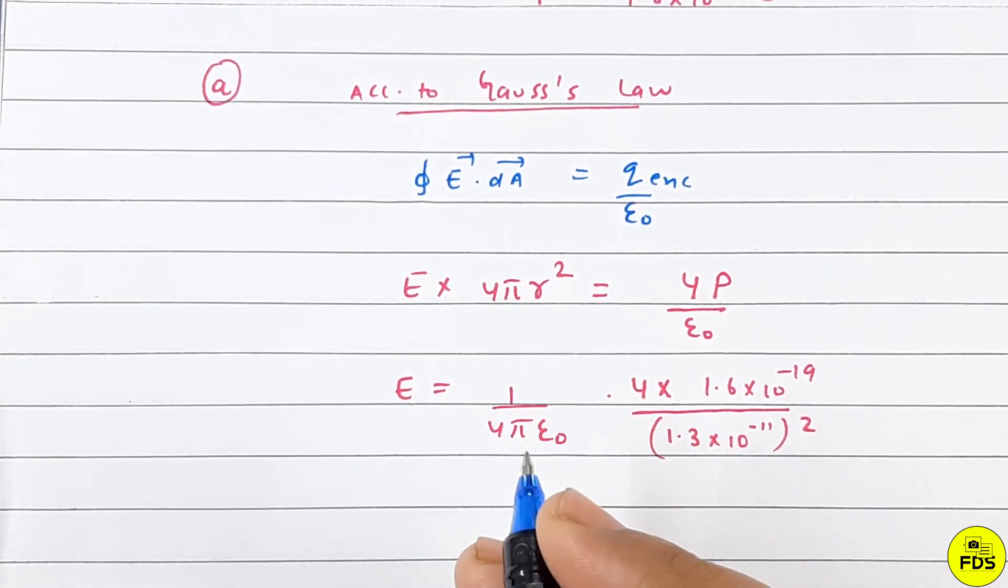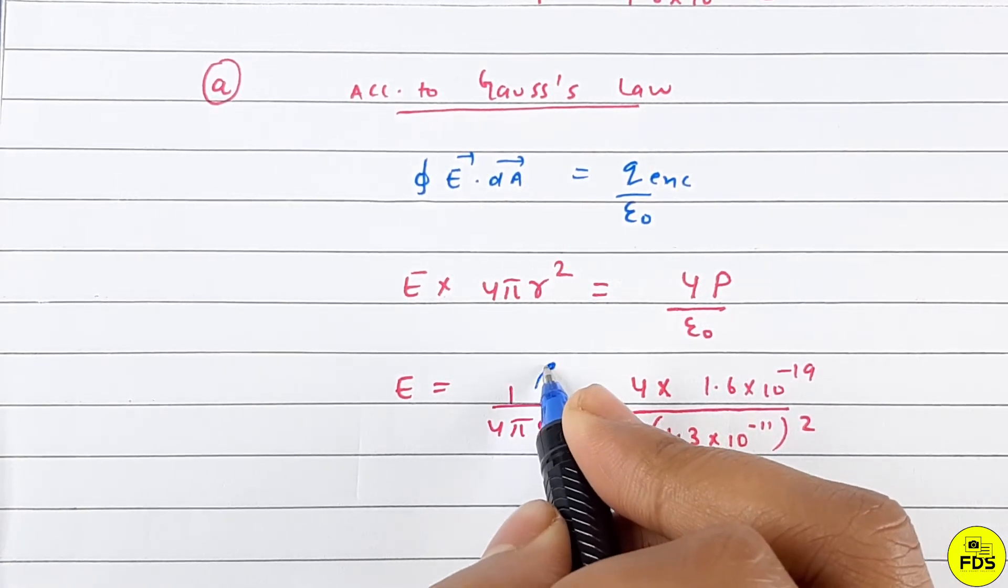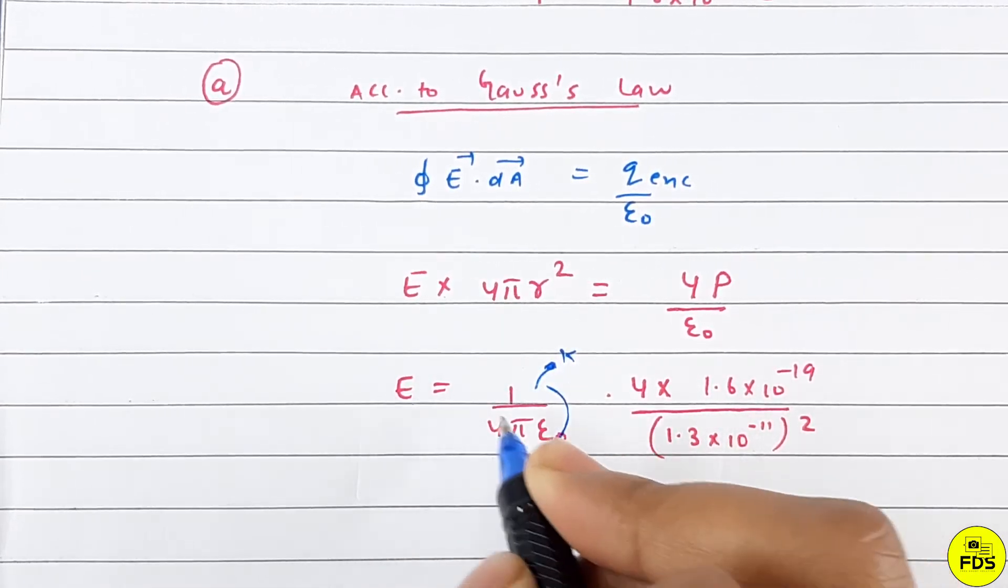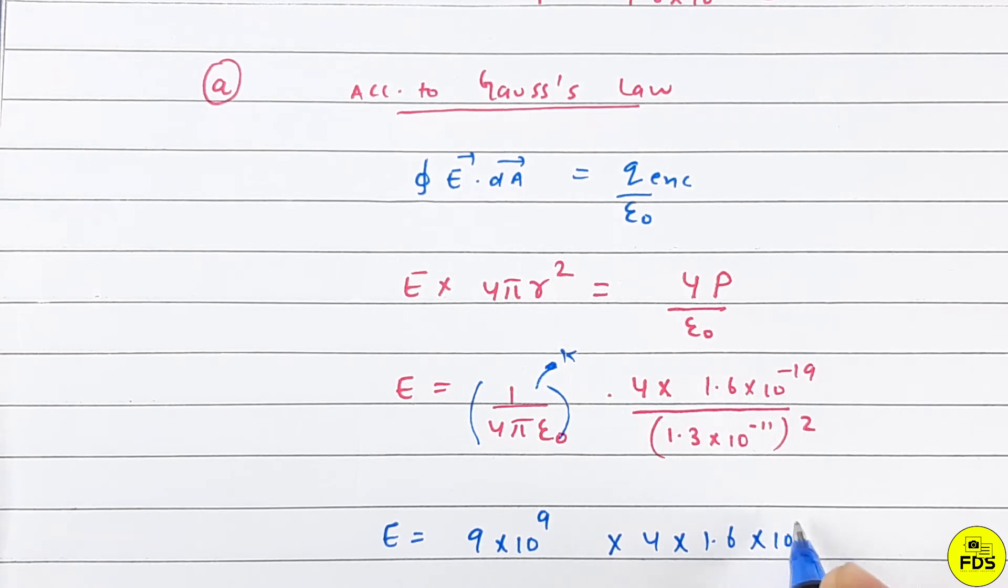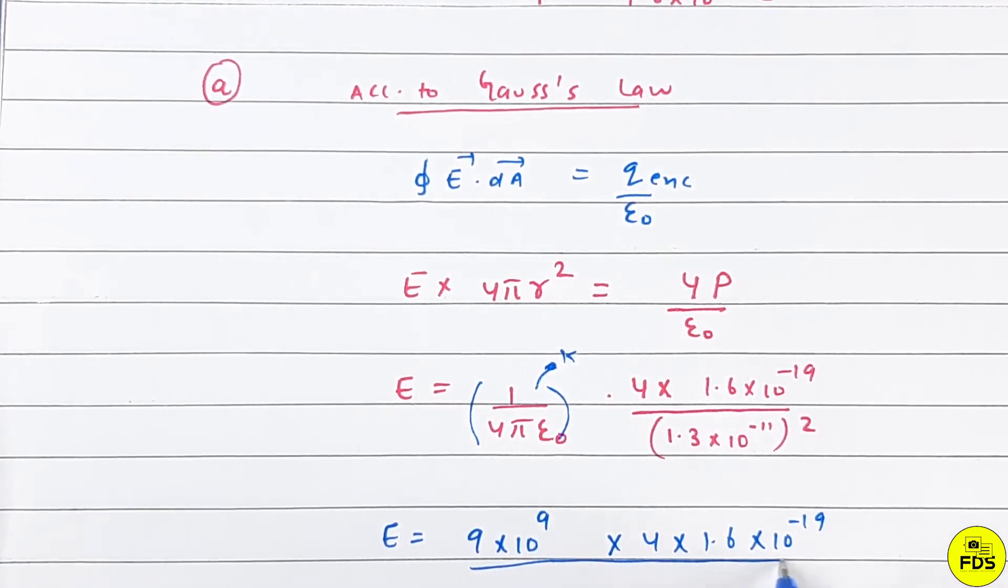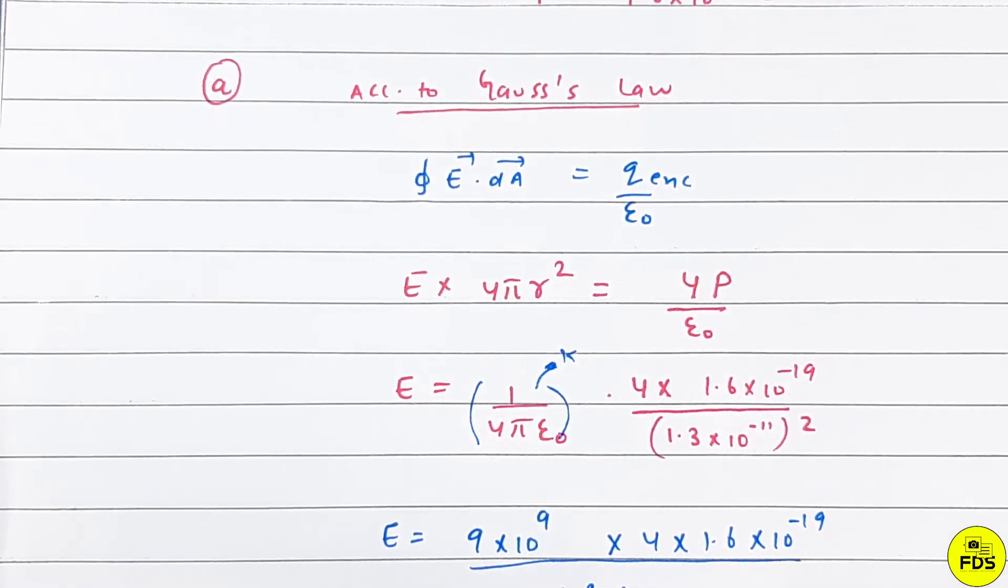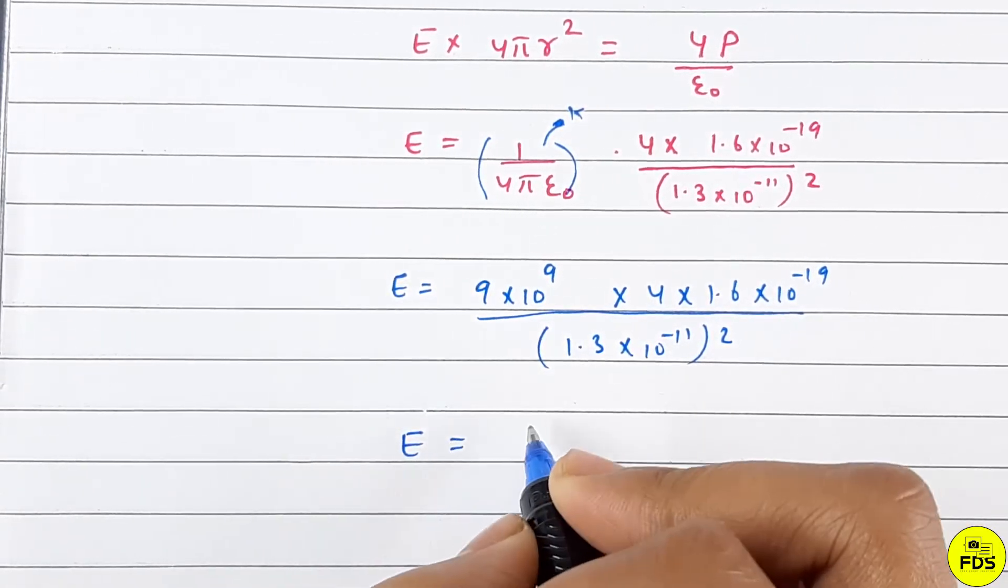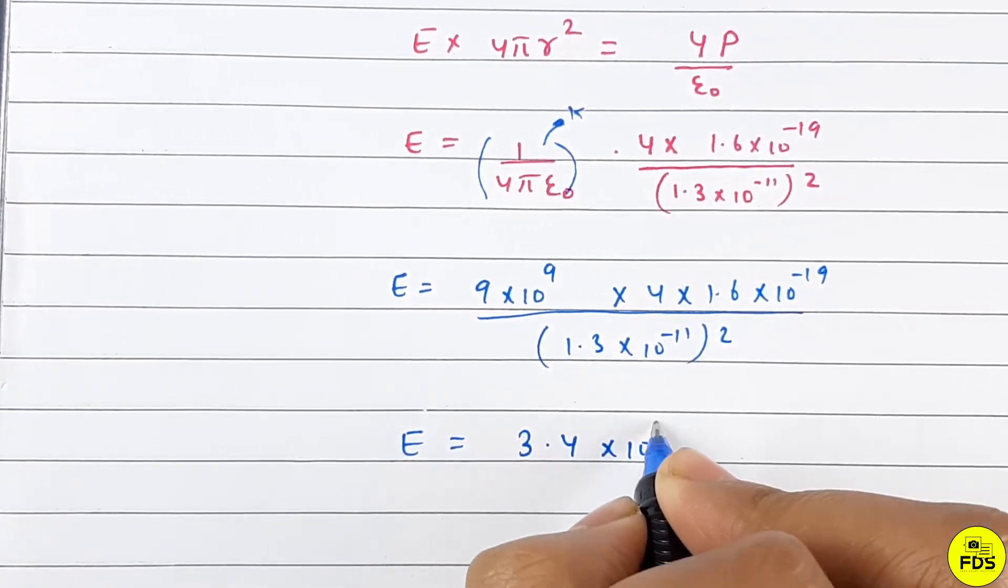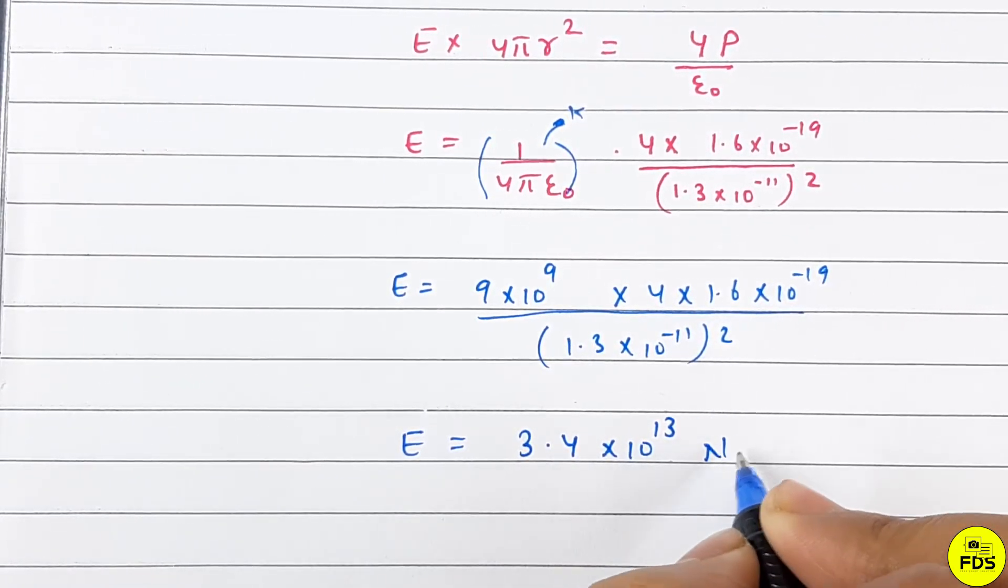So we have k which equals 9 × 10^9. Substituting the values: E = k × (4 × 1.6 × 10^-19)/(5.2 × 10^-11)². The value of k is 9 × 10^9.